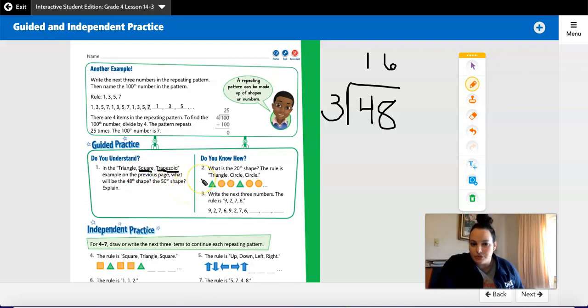Number two, what is the 20th shape? The rule is triangle, circle, circle. Try out this number and then come back to check your answer.